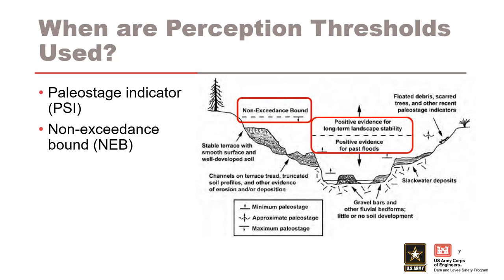Examples of direct evidence are floated debris or scarred trees that can be age-dated using radiocarbon-14 dating or other modern dating methods. When there is evidence that an area has not been inundated by flood events over a certain period of time — or in other words, when there is evidence of long-term stability at an elevation — we call it a non-exceedance bound, or NEB. An example of evidence for a non-exceedance bound is the discovery of a stable terrace with well-developed soil. Flow estimates associated with a non-exceedance bound are typically modeled in RMC Best Fit using a perception threshold.